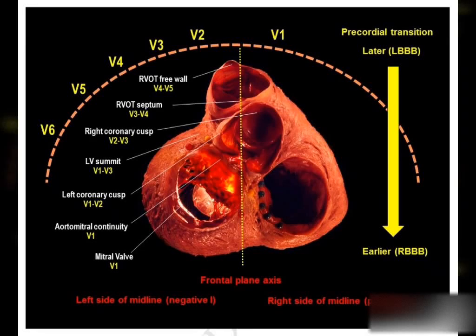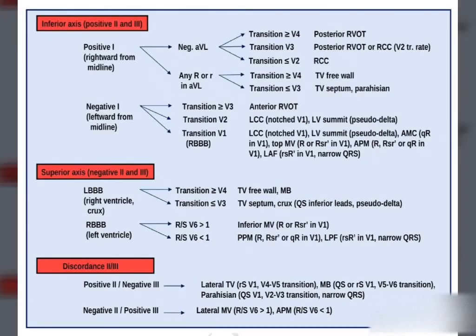The topic here is how to use the 12-lead ECG to predict the site of origin of idiopathic VT. Looking carefully at this figure, the transition zone is key: transition at V4 to V5 indicates RVOT free wall; V3 to V4 indicates RVOT septum; and V2 to V3 indicates right coronary cusps.